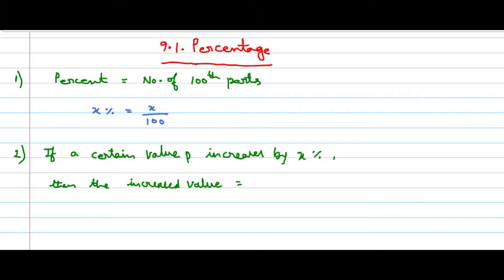What does it mean by a percentage? In general, percent means 'per cent' — cent means 100. For example, 10 percent means, for 100, its value is 10.